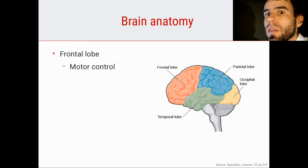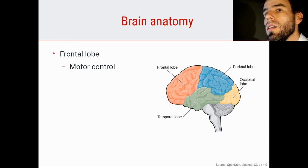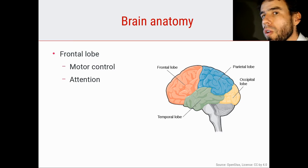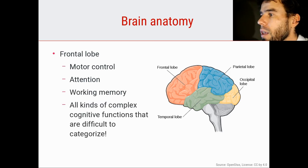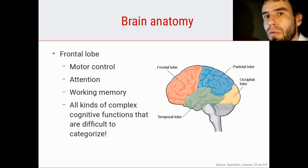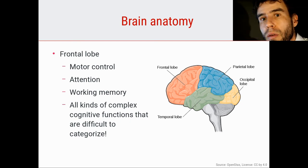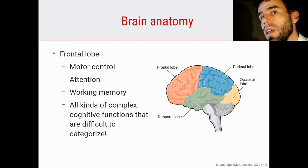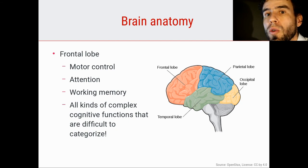Finally, we have the lobe of all lobes: the frontal lobe. It is involved in motor control — there is a motor cortex in the frontal lobe that allows us to execute motor commands — but it is also involved in cognitive processes that are hard to label, like attention, working memory, and complex cognitive processes that psychologists sometimes refer to as executive functions. These are the complex cognitive processes that in a sense give us our personality. For example, whether you are a very inhibited or very disinhibited person is to some extent associated with your frontal cortex, and parts of who you are are defined in a complex way by your frontal cortex.